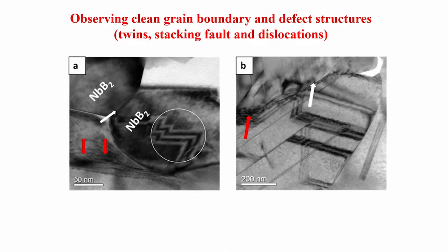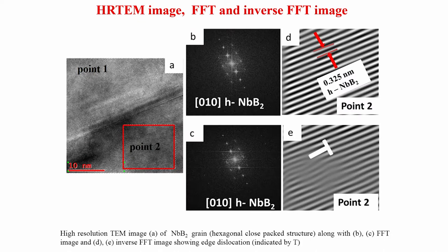There are very clean grain boundaries — no grain boundary phases, as expected. We have also seen stacking faults, and intersecting twins are observed in these materials. These are the kinds of defect structures which we have very clearly observed in the niobium boride microstructure.